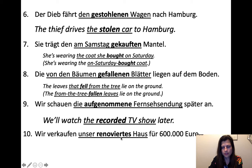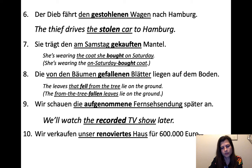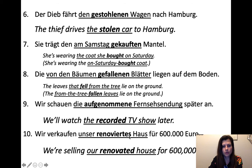Wir verkaufen unser renoviertes Haus für 600.000 Euro. We have unser renoviertes Haus — Haus is neuter, and unser works like an ein-word. The adjective ending -es is needed for neuter accusative with an ein-word. Renoviert comes from renovieren — to renovate. Verbs ending in -ieren don't take ge- for the past participle; you just add the -t, which signals past participle, plus the adjective ending. We're selling our renovated house for 600,000 Euro.